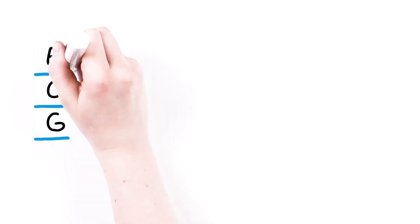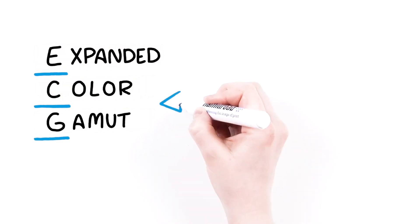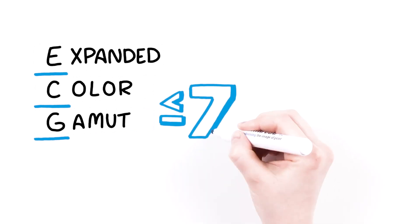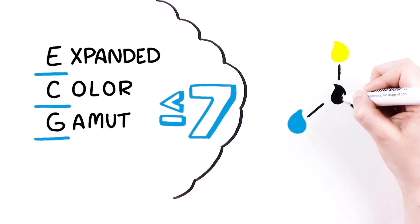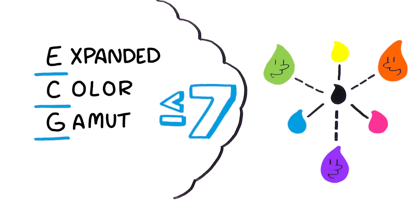What is ECG? Expanded colour gamut printing is the practice of using a larger set of process inks, typically up to seven: cyan, magenta, yellow, and black, plus orange, green, and violet, to achieve a larger colour gamut than that of CMYK.